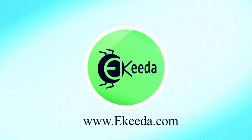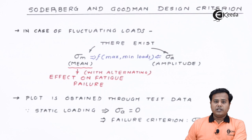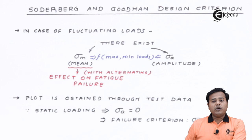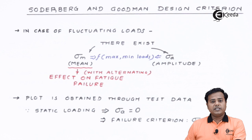What we know so far is, in case of the fluctuating loads, there can exist either mean stress and amplitude stress. They may co-exist together or separately. We know that both are functions of maximum and minimum loads. Because of the variations in loads, one extremity is at maximum, another at minimum.